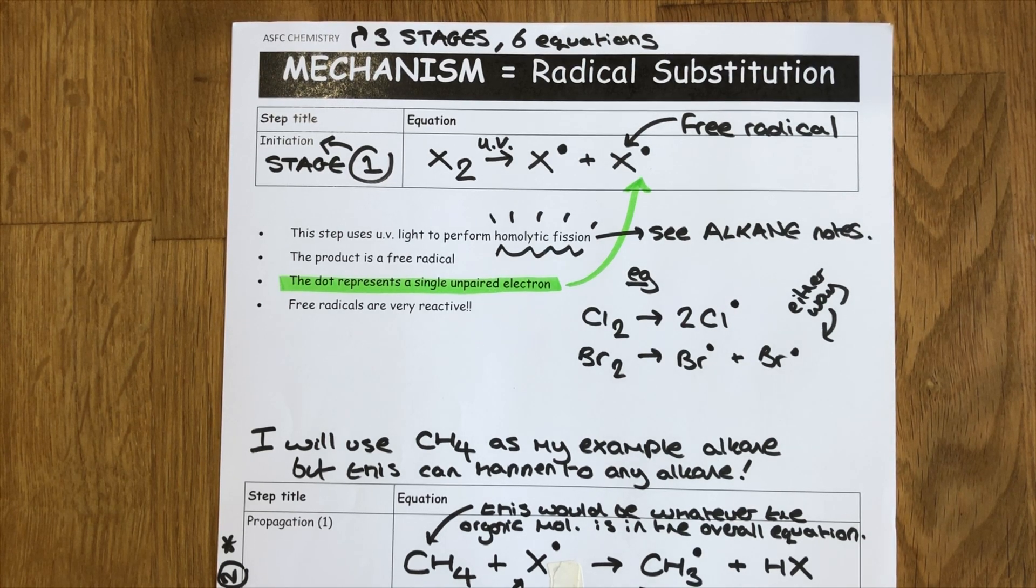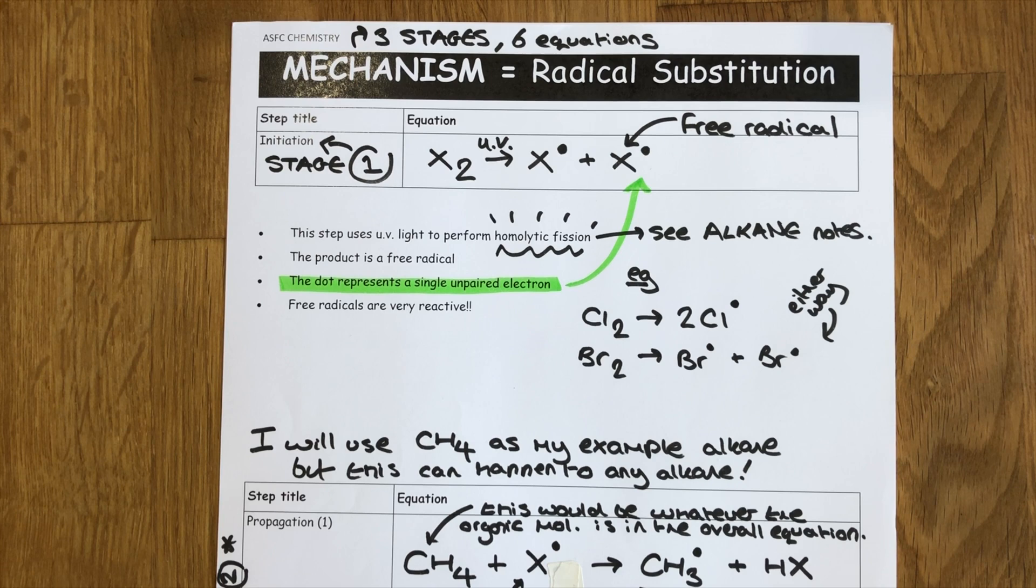The mechanism of radical substitution has three stages and gives you six equations when all stages are finished. The three stages are called initiation, propagation and termination. Stage one, initiation, has one equation to learn. Stage two, propagation, has two equations to learn. And stage three, termination, has three equations to learn.